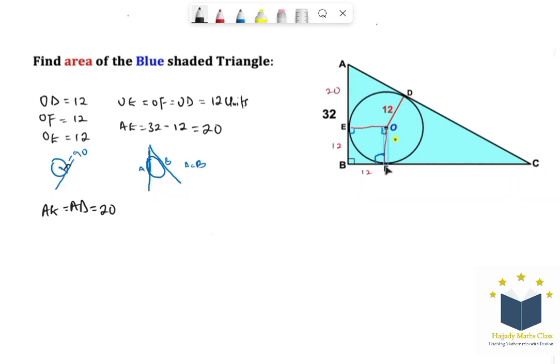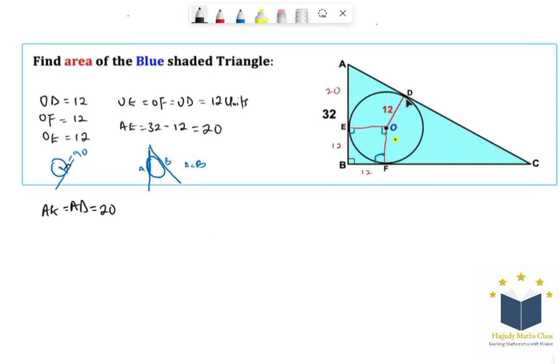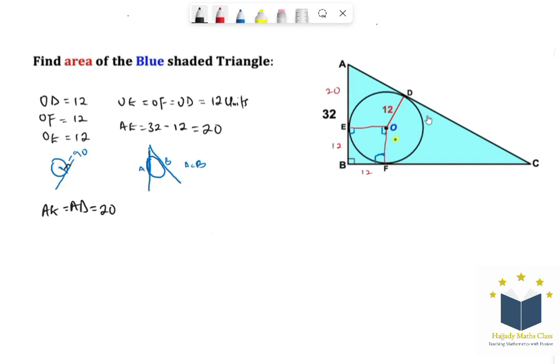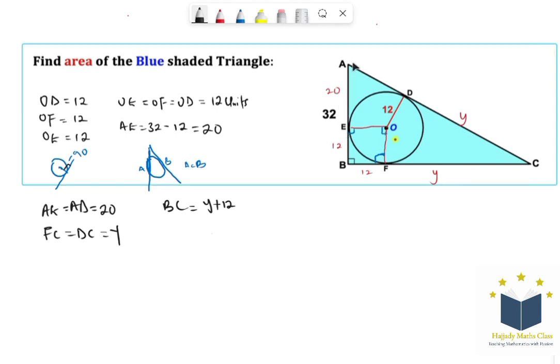Then also using the same approach, the congruent tangent theorem, that is FC and also DC must be the same. So since that is unknown, we can assume that to be Y units. That is we have FC to be equals to DC, which is the same thing as Y units, which is unknown. So with this we can say that our BC, that is from B down to C, is going to be addition of Y plus 12. So we have Y plus 12 units.